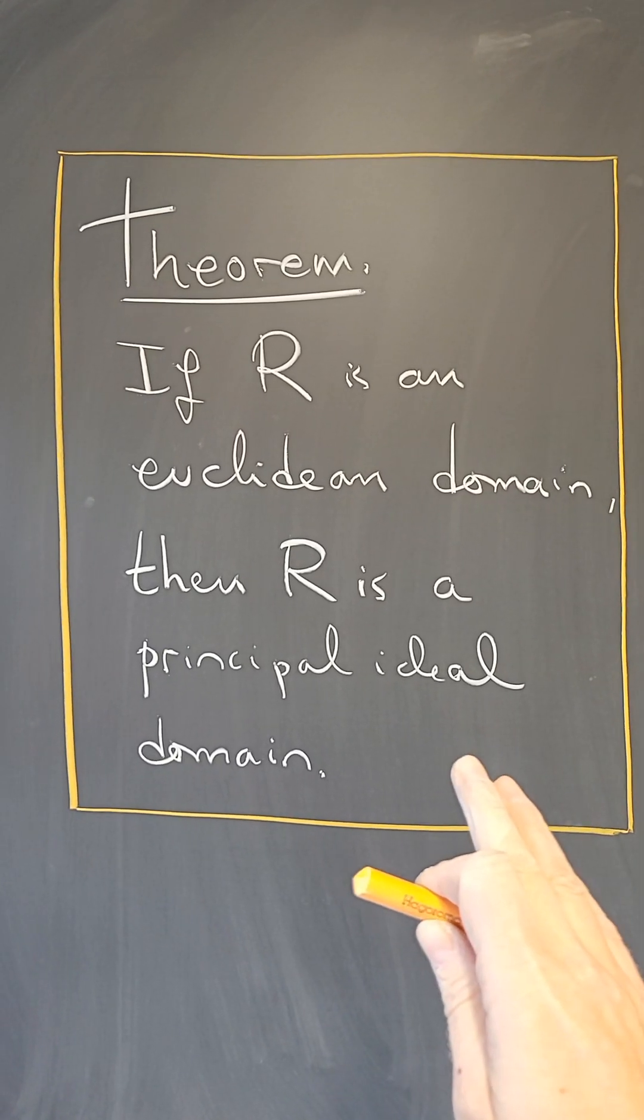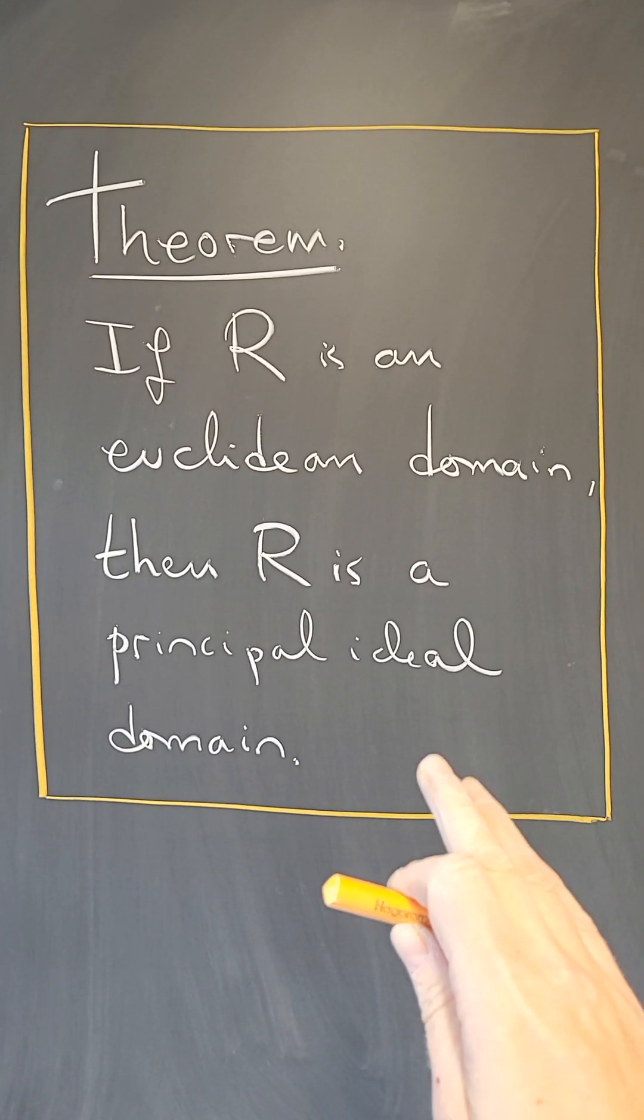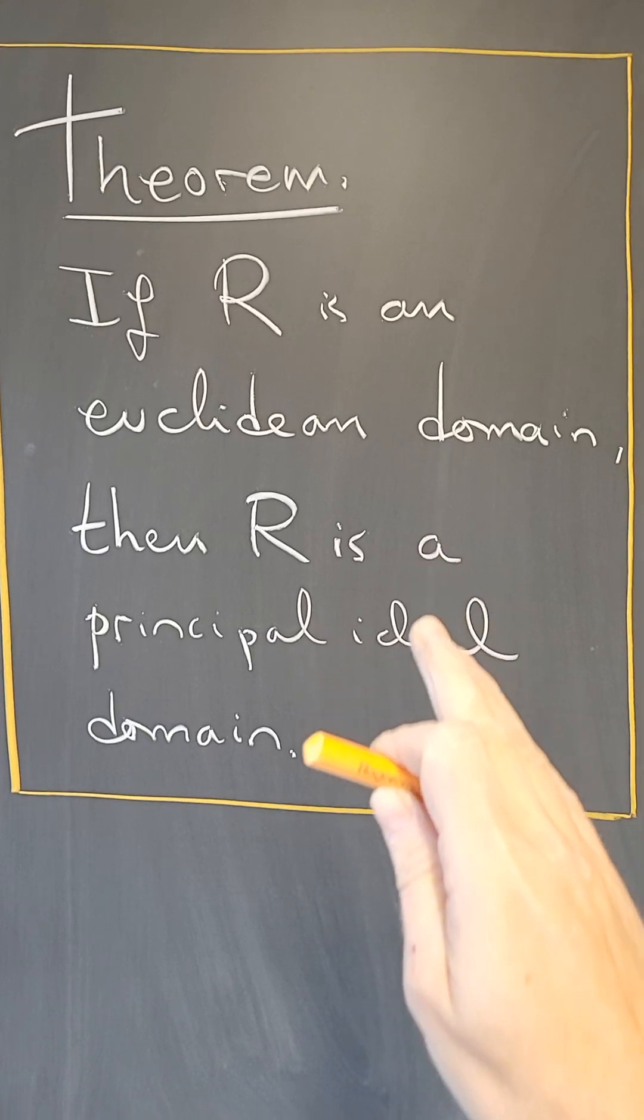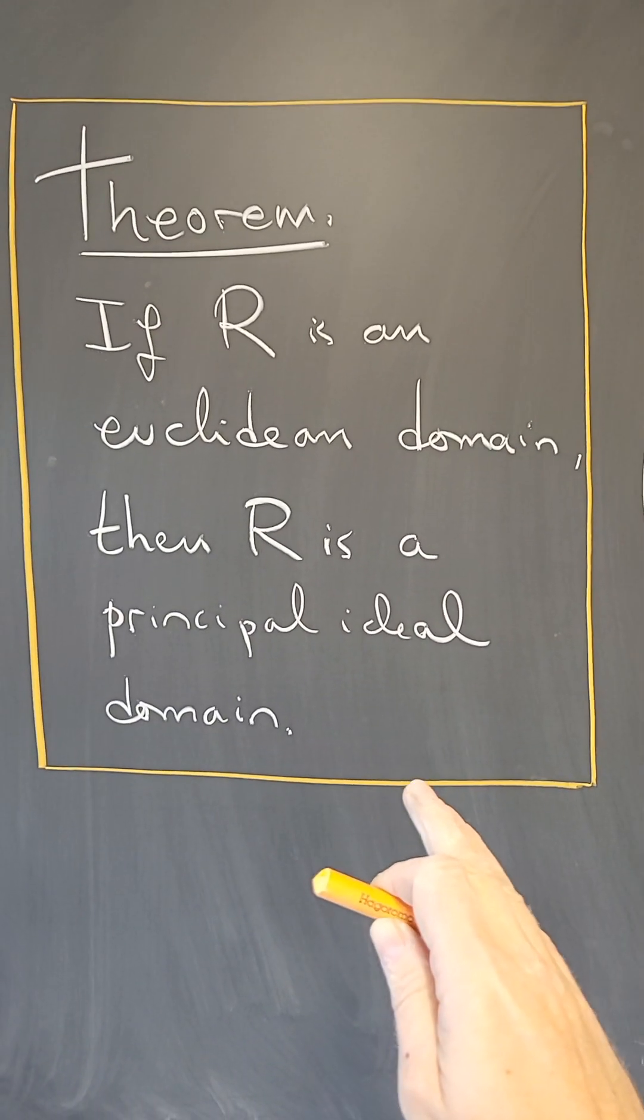Let's give a proof of this classic result in abstract algebra, the fact that any Euclidean domain is also a PID, a principal ideal domain.